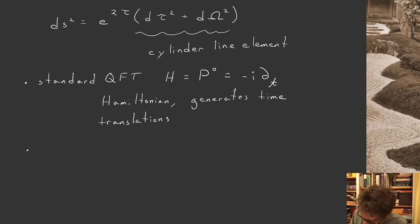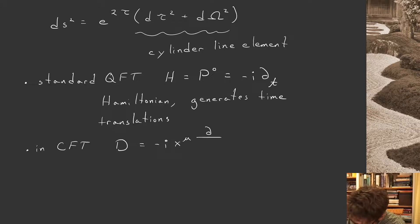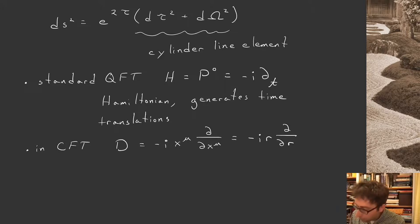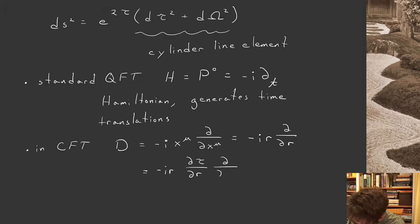Now in CFT, I want the dilatation operator to take the same role. So how can I make sense of that? So the dilatation operator, remember, we wrote as -ix^μ∂_{x^μ}, which in my spherical coordinate system, or polar coordinate system, I can write as -ir∂_r, where r is the radial coordinate. Okay, now by the chain rule, this is -ir(dτ/dr)(∂/∂τ).